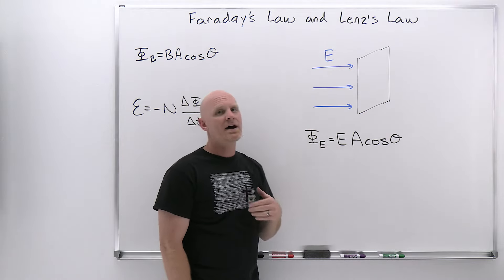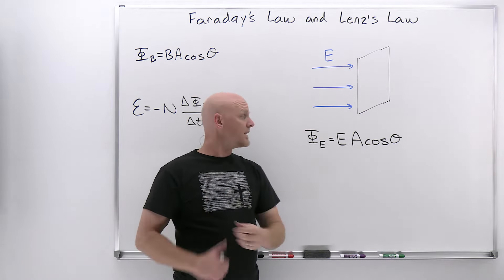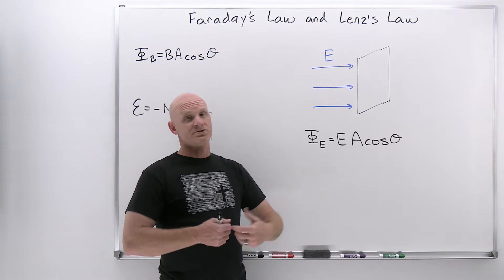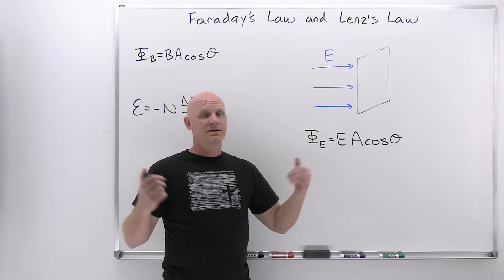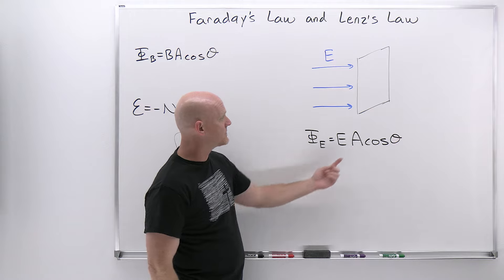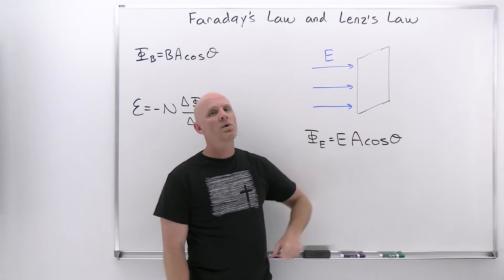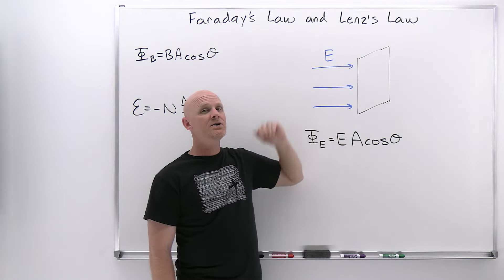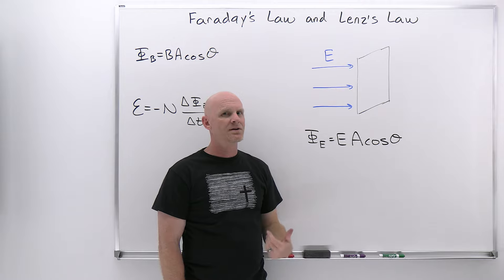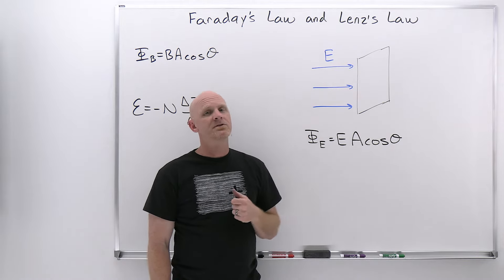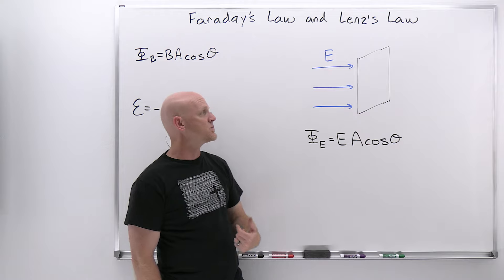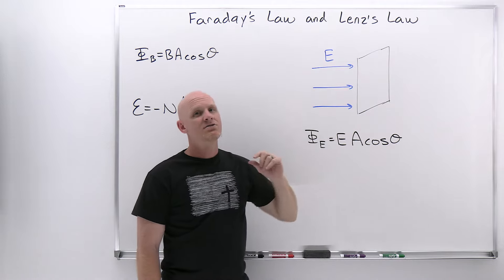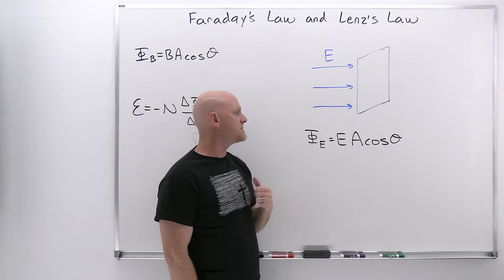How do you get more field lines to pass through a surface? You've got three ways: you can have a stronger electric field, you can have a bigger surface area, or you can change how it's oriented with respect to the electric field. If your surface and the electric field are in the same plane, no field lines pass through it. You get a maximum when they're perfectly perpendicular to one another — that's when it reaches its maximum electric flux.